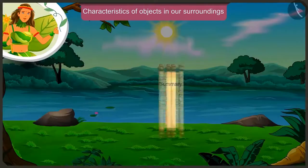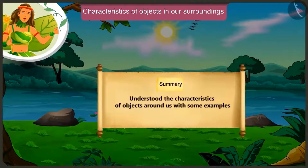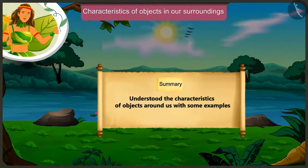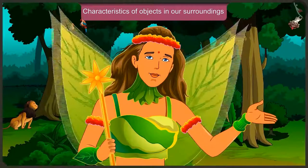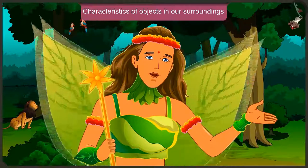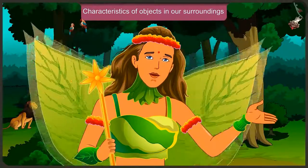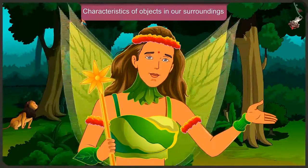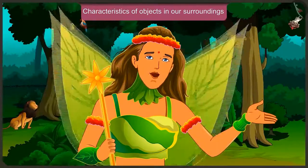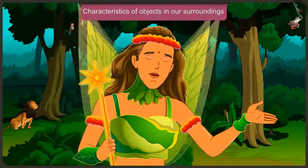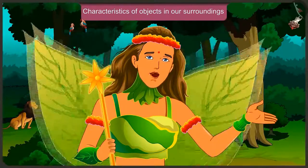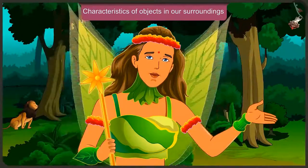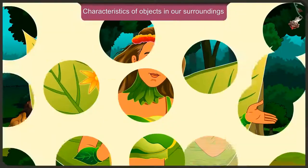Today we understood the characteristics of objects around us with some examples. In the next video, we will see the mistakes we make while understanding the characteristics of the objects around us.